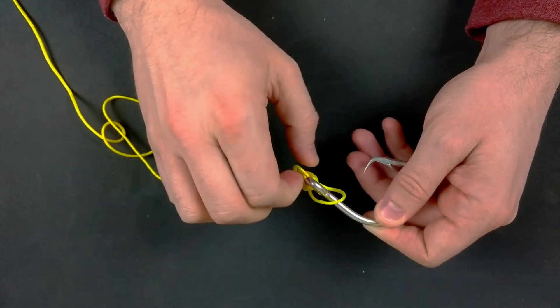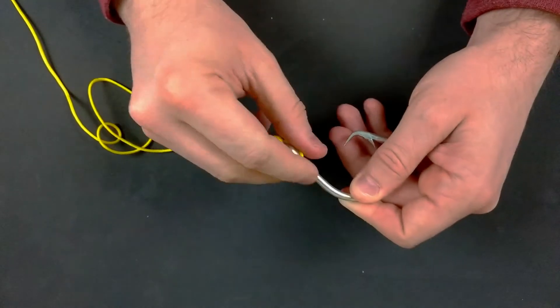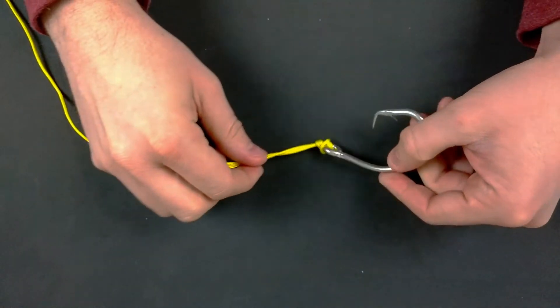We're going to wet the knot thoroughly and cinch down, making sure it seats well in front of the hook eyelet.